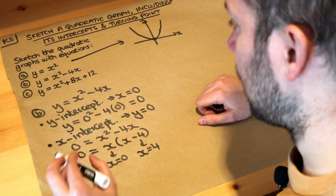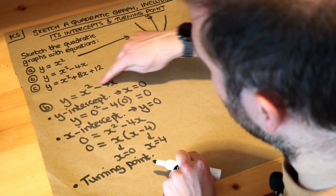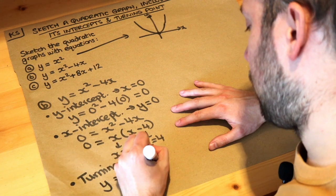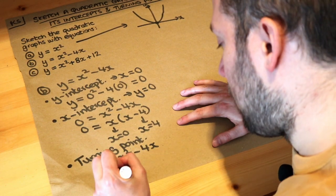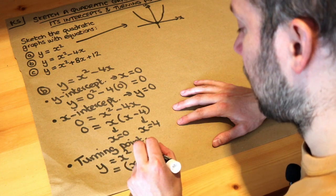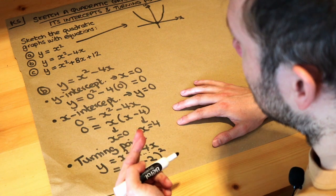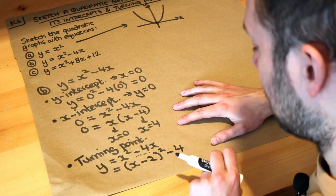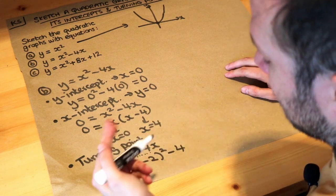The final thing we want is the turning point, and we find that by completing the square. With y equals x squared minus 4x, we open a bracket with x and then halve the coefficient of x: half of minus 4 is minus 2. So we write (x minus 2) squared, then square the minus 2 to get positive 4, and subtract it. This gives (x minus 2) squared minus 4, because the plus 4 and minus 4 cancel out.